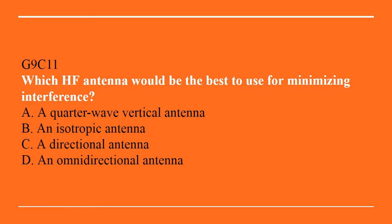G9C11: Which HF antenna would be best for minimizing interference? A. A quarter-wave vertical antenna. B. An isotropic antenna. C. A directional antenna. Or D. An omnidirectional antenna. The correct answer is C, a directional antenna.